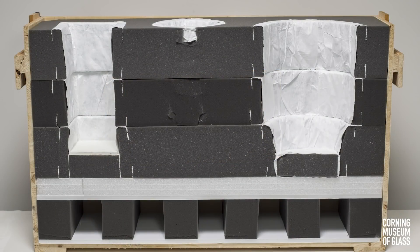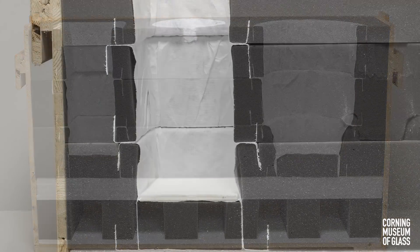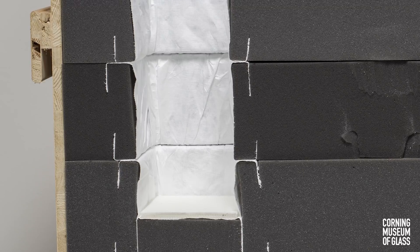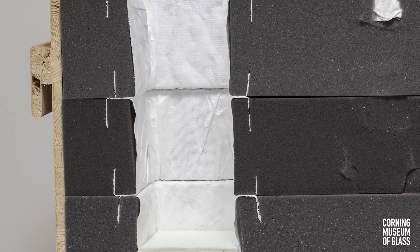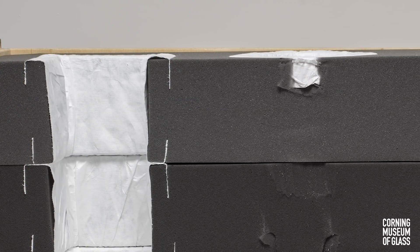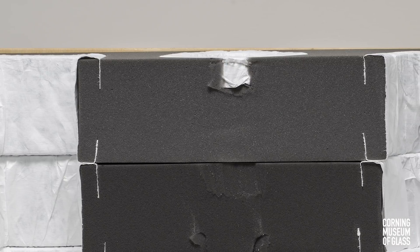Note that if your object is taller than one layer of foam is deep, you'll need to determine what cuts to make in the next layer or layers. This photo shows a cross-section of our crate, where the cavities extend through a few layers of foam. Once the first layer is cut, you can trace the object's shape onto the next layer of foam, and repeat the cavity cutting process as needed.